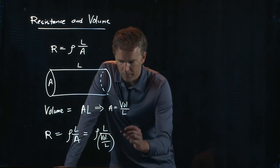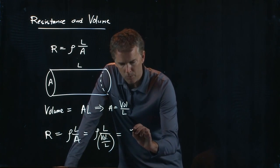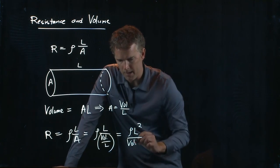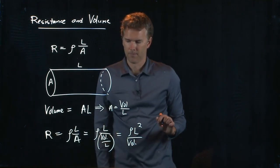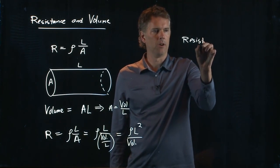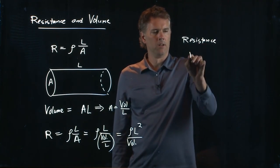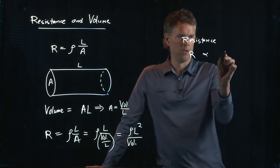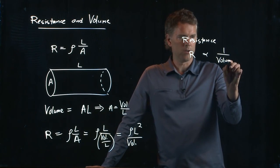And now I know what I do. I flip the L's up to the top and I get rho L squared divided by volume. So resistance R is proportional to one over the volume.